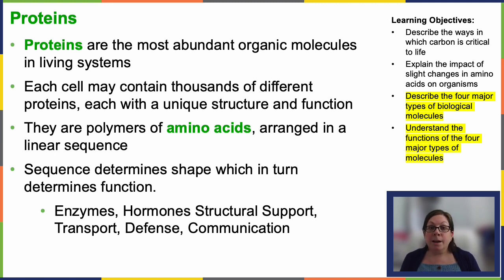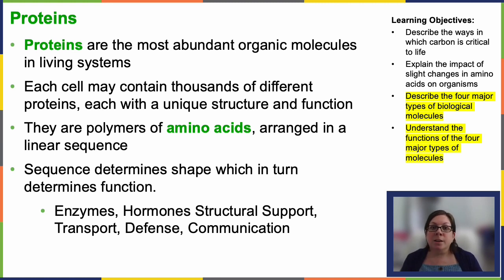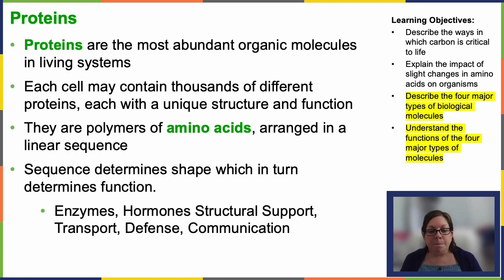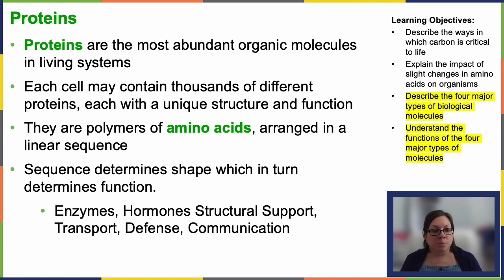Defense is another function — antibodies are proteins that play an incredibly important role in the adaptive immune system, recognizing and neutralizing foreign invaders like bacteria and viruses. Finally, communication: some proteins, like hormones, transmit signals between cells and regulate a wide range of physiological processes. When you look at neurotransmission, there are also important proteins involved — some neurotransmitters are themselves proteins.